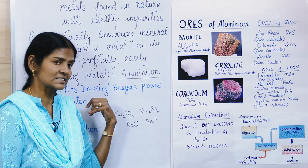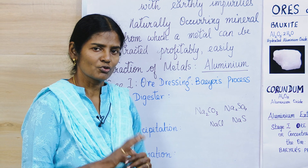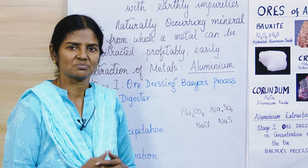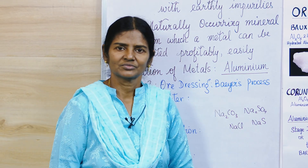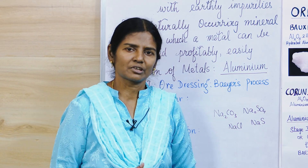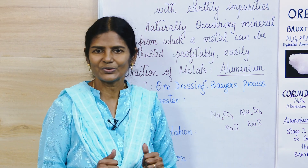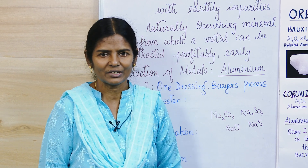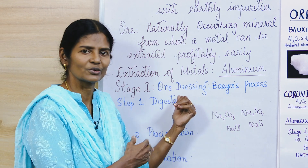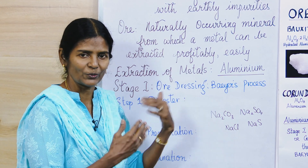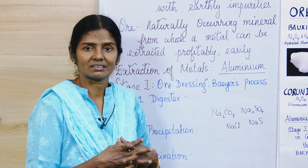Now coming back to extraction. Usually the extraction of metals has four stages — step by step you extract and remove the impurities. Stage one: just like you dress up before going to a wedding or a party, the first stage is ore dressing — getting the ore ready — also called concentration of the ore.